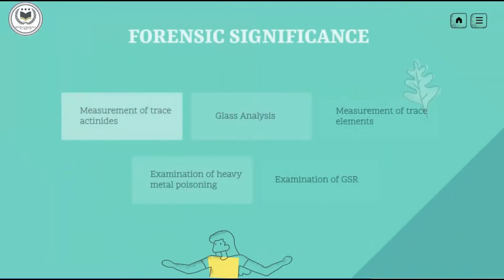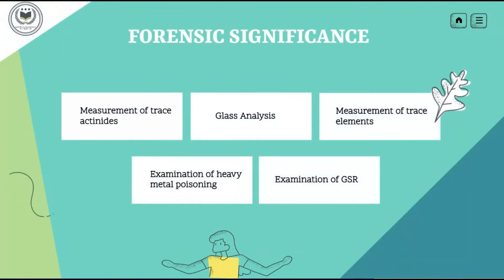Regarding forensic significance: ICP-MS is used significantly to measure the trace evidence of actinides present in radiation poisoning or in any case where radiations are used. In the forensic field, ICP-MS is popular for glass analysis. Trace elements on glass can be detected, and these trace elements can be used to match a sample found at the crime scene to a suspect.